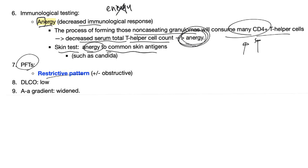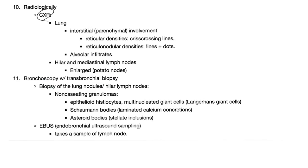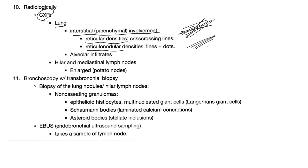Pulmonary function test shows a restrictive pattern. DLCO is low because the problem is in the lung. The A-a gradient is prolonged or widened. Radiologically on chest X-ray you'll find interstitial involvement: reticular densities and reticulonodular patterns. Reticular are crisscrossing lines; reticulonodular are lines with some dots. You'll also find some alveolar infiltrates.